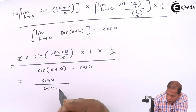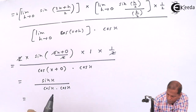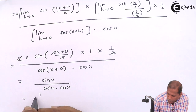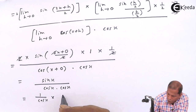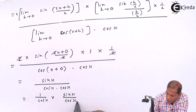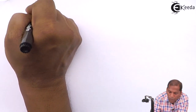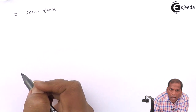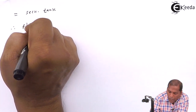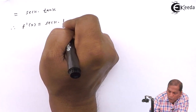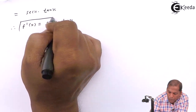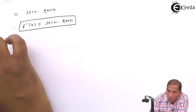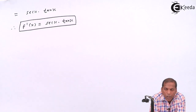And in the denominator we are left with cos(x) into cos(x). So this can be written as 1 upon cos(x) into sin(x) upon cos(x). Now 1 upon cos(x) gives sec(x) and sin(x) upon cos(x) gives tan(x). So in this way we get f'(x) is equal to sec(x) into tan(x). Thus we proved the derivative of sec(x) is sec(x) tan(x). Thank you.